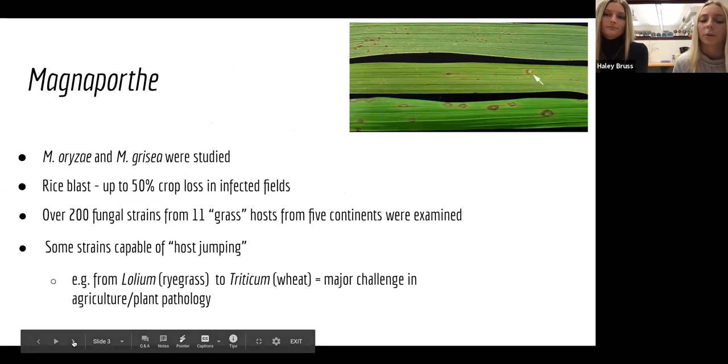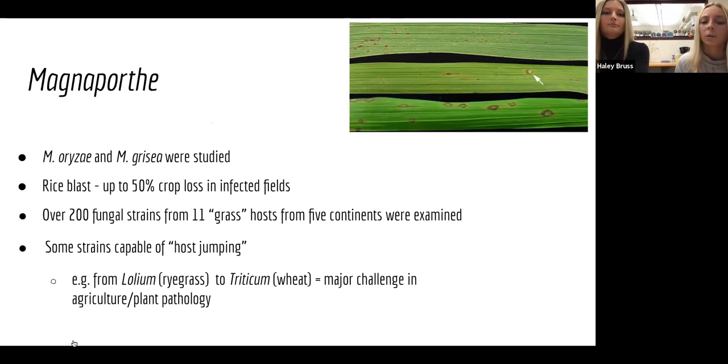So our study focused on analyzing Magnaporthe oryzae and Magnaporthe grisea. And more specifically, Magnaporthe oryzae is one of the most widely distributed agents of rice blast disease, which is a highly destructive disease in crops. And ultimately, it can lead to up to 50% of crop loss. And telomeres are of special interest in the blast fungus Magnaporthe because the adjacent regions are enriched in genes controlling interactions with host plants. And not only this, but the chromosome ends show enhanced polymorphism and genetic instability. And this phenomenon makes certain strains capable of host jumping, meaning that the pathogen can start in a host such as Lolium and then go to another host such as Triticum. And this is a major challenge in plant pathology and agriculture. And in our study, we examined over 200 fungal strains that came from over 11 grass hosts, which spanned five.